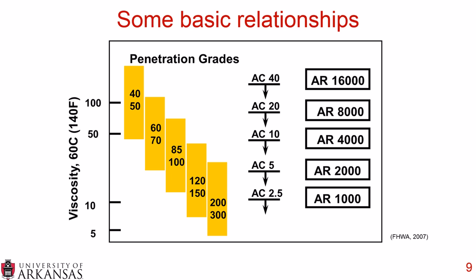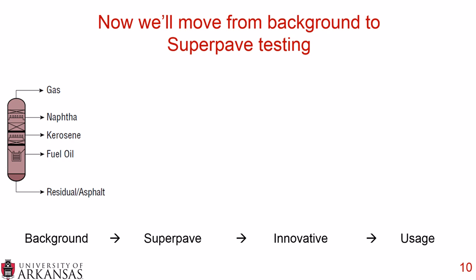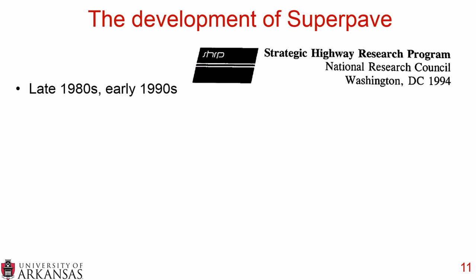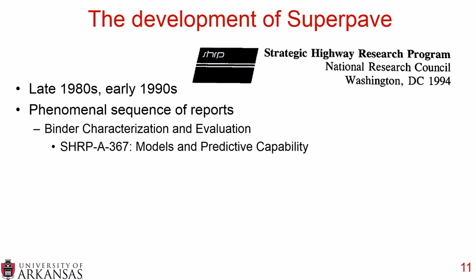These three primary grading systems led up to the 1980s and 90s when SHRP occurred — the Strategic Highway Research Program. Many reports were released in 1994, though the program ran from the late '80s to early '90s. There are phenomenal reports covering all topics in asphalt concrete, but for asphalt binder the key ones are SHRP A367 (Models and Predictive Capability), A368 (Chemistry), A369 (Physical Characterization), and A370 (Test Methods) — all available online for free download.